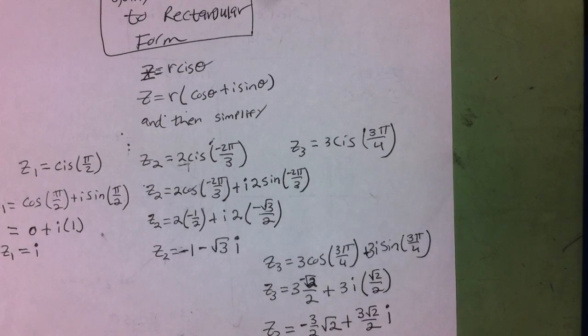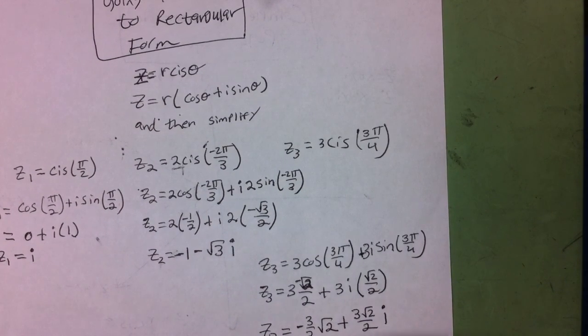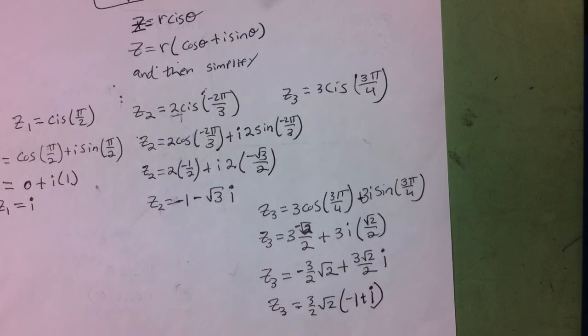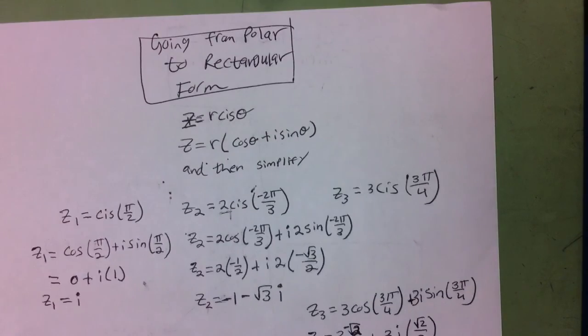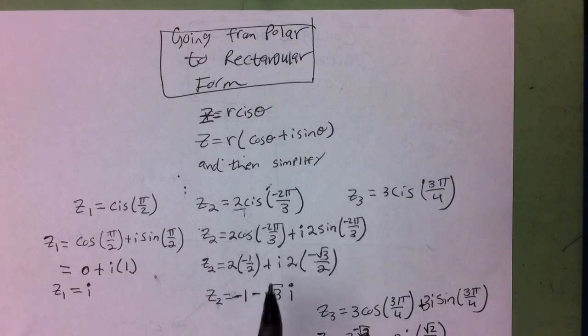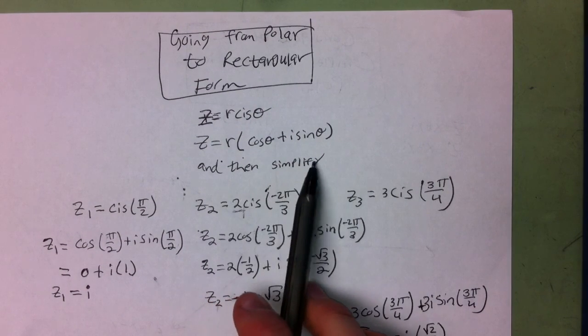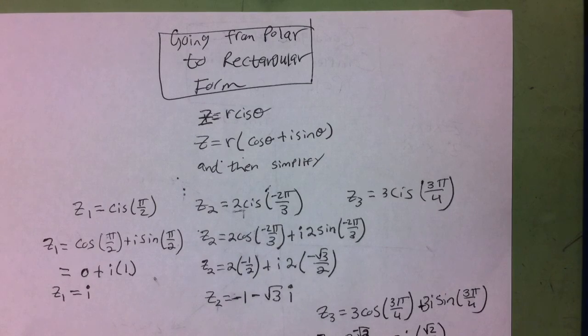These are technically the same thing, so you could factor this and say it's 3/2*√2 times negative 1 plus i as well. But in general, all you have to do to go from polar to rectangular form is expand cis form into cos(θ) plus i*sin(θ) and then simplify. Thank you.